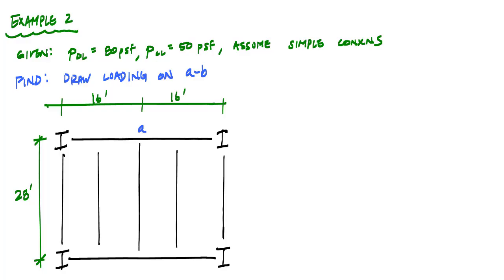All right, for this next example I've got the same loads and I'm gonna assume simple connections everywhere, and I want to determine the loading and draw a model of beam AB right here. And I got the same floor plan layout, but instead I'm gonna remove some of these beams here so that the width between beams is 16 feet, but the length of the beams are still 28 feet, and I want to figure out what the tributary area is.